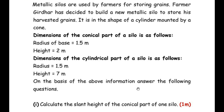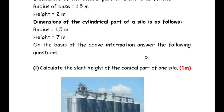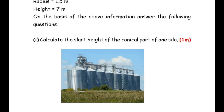So let us try to understand the question first. Farmers use metallic silos — they look somewhat like this. These are the metallic silos which farmers use to store grains, and they are in the shape of a cylinder mounted by a conical part. Now in this question, we need to find out what is the slant height of this conical part.